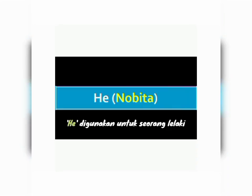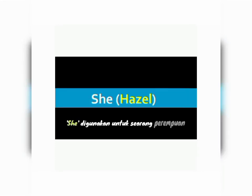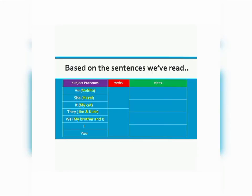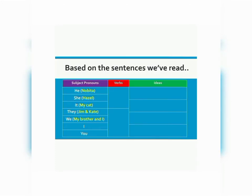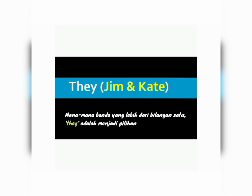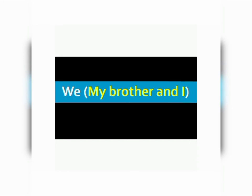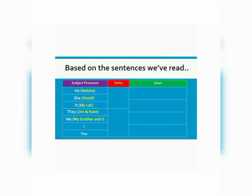He refers to a male. Nobita is a name of a male, so we can also use he. Hazel is a name of a female, hence we can use the subject pronoun she. My cat is a non-human thing and in terms of quantity it is only one, therefore we can use it. For Jim and Kate — anything that is more than one — we will have to use they. For we, any pronoun that ends with the keyword 'and I', we will have to use we as the subject pronoun. And last but not least, I and you.